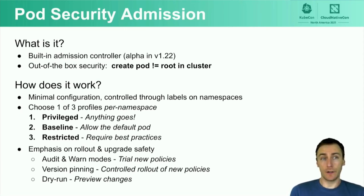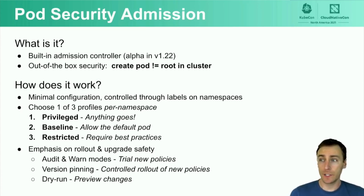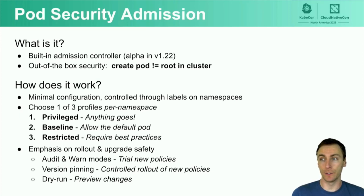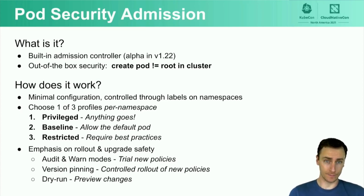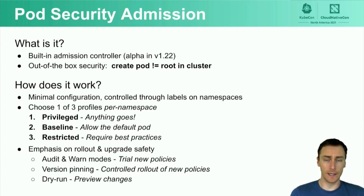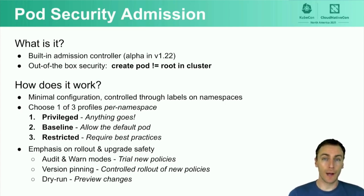Another goal of Pod Security Admission was an emphasis on rollout and upgrade safety. This was something that was really problematic with pod security policy — it was really difficult to roll out and difficult to make changes to policies. So there are three different features of Pod Security Admission that we've added to make this easier, and I'm going to demo those in a few minutes. Those are audit and warn modes, which let you trial new policies before enforcing them; version pinning, which lets you decouple cluster upgrades from profile upgrades on namespaces; and dry run, which lets you preview your changes against existing objects in the namespace.